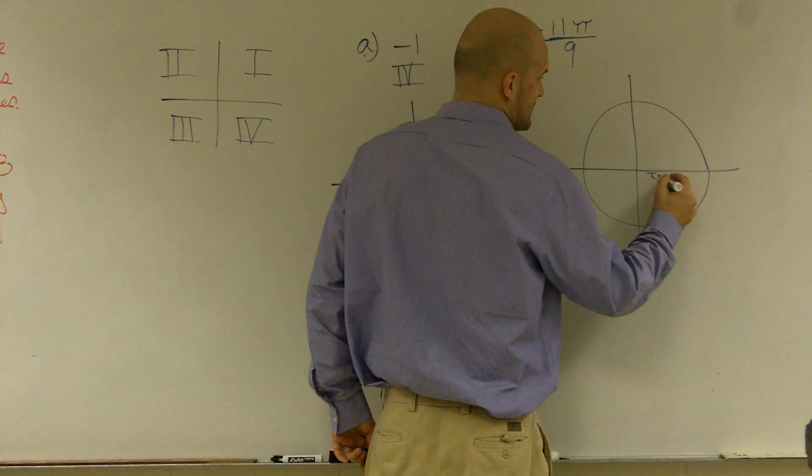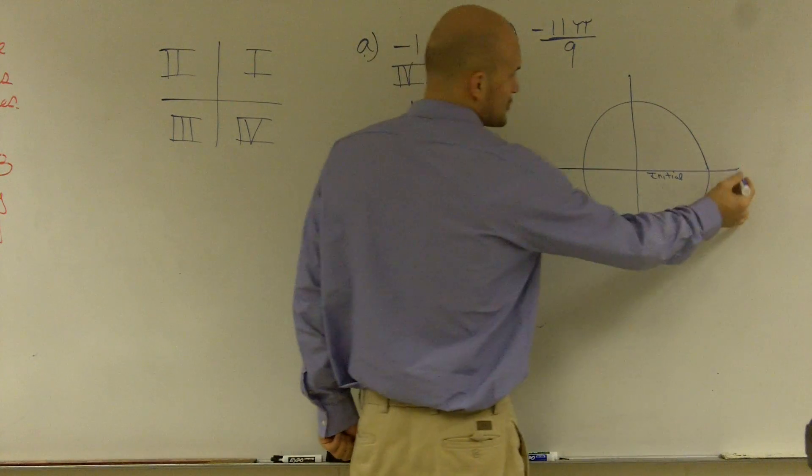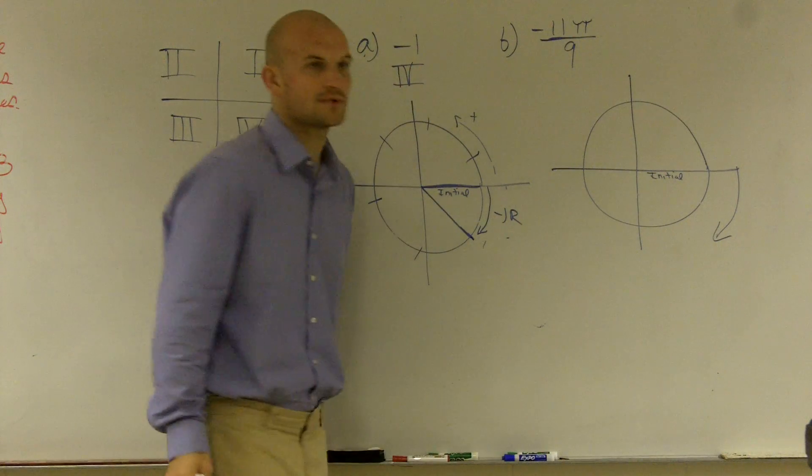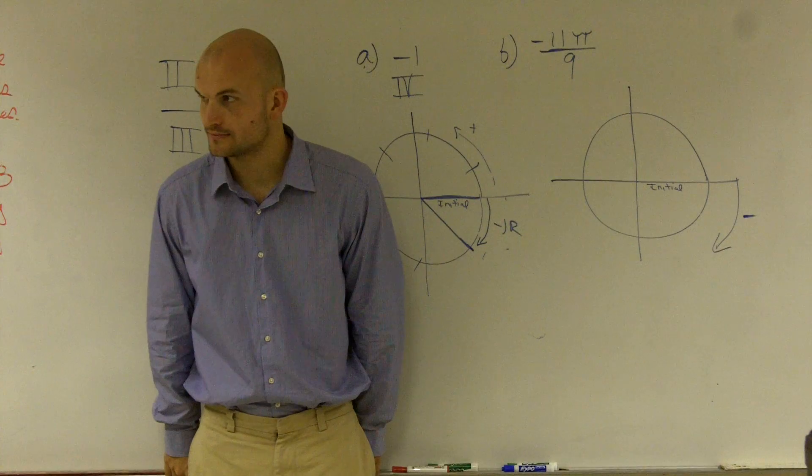So remember, here's my initial side. I'm always going to start here. And then the negative direction is going to tell me to go this direction, because that's negative. Now, the hard part is, how far do I go around the circle?